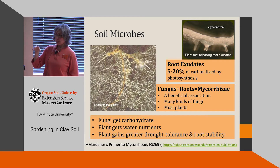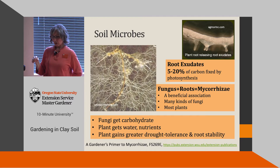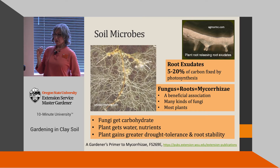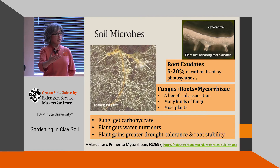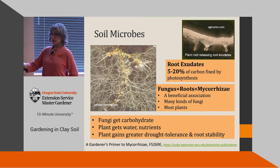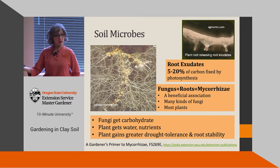The liquid food that comes out of the root is called root exudates. Each species of plant has its own composition — its own recipe — for making exudates, and the content in those exudates appeals to certain kinds of microbes, selectively cultivating the soil biology around each plant.